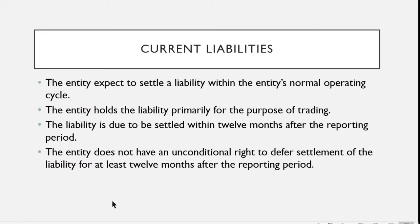For example, going back to the earlier example: the end of the reporting period, or the end of the normal operating cycle, is December 31, 2020. And our debt is to be paid on March 1, 2021. So counting from December 31, 2020 until March 1, 2021, that would be 2 months. So it falls within the operating cycle, meaning the liability is due to be settled within 12 months after the reporting period — therefore it becomes a current liability.